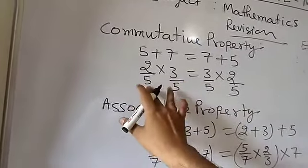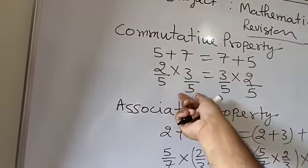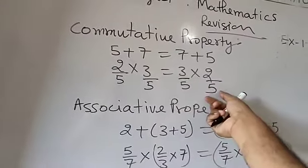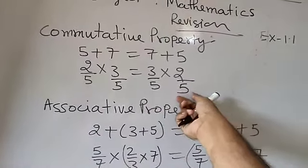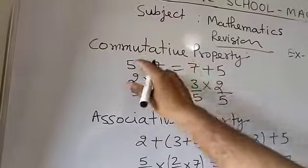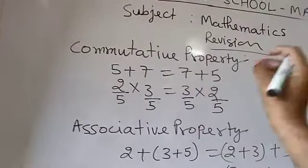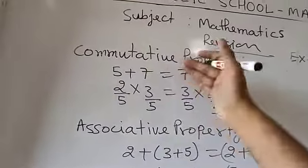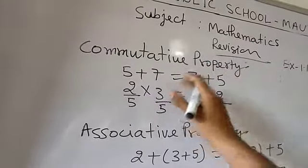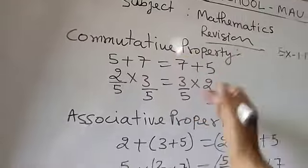In the same way, if I multiply two numbers — first I have written 2 by 5, then 3 by 5; now here I have written 3 by 5 first and after that 2 by 5. Both multiplications will be the same. So that property is called the commutative property — if you take two numbers and do the mathematical calculation in which the answer is not affected, that is called the commutative property.